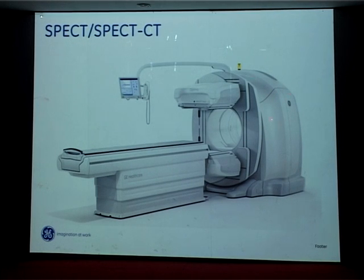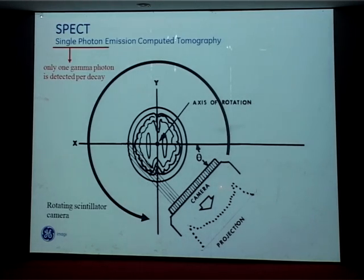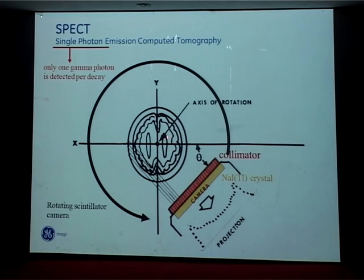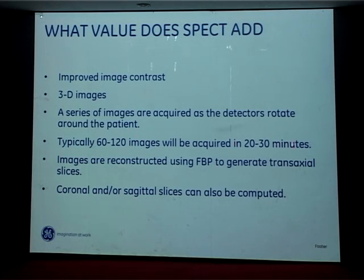A SPECT-CT machine combines a gamma camera with an attached CT scanner. SPECT — single photon emission computed tomography — detects one gamma photon per decay event. The detectors rotate around the patient, collecting images at particular points; these are then reconstructed on the computer to give an idea of activity distribution in the patient. SPECT improves image contrast and gives 3D images. A series of 60 to 120 images are acquired as detectors rotate in 20 to 30 minutes, reconstructed using filtered back projection to generate transaxial slices. Coronal and sagittal slices can also be generated.